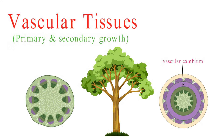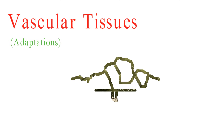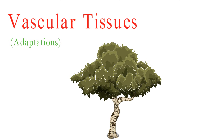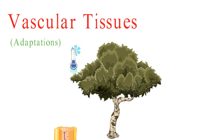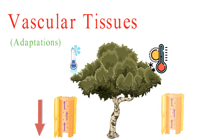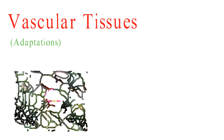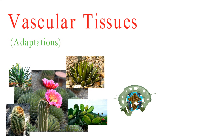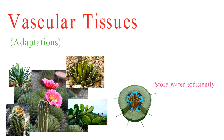Keep in mind that the structure and activity of xylem and phloem can vary among plant species. In deciduous trees, the activity of vascular bundles changes with the seasons. During winter, the xylem may slow down to conserve water, while in the spring, it revs up to transport water needed for new leaf growth. Moreover, some desert plants have developed specialized vascular bundles that allow them to store water efficiently, helping them survive in harsh, water-scarce environments.